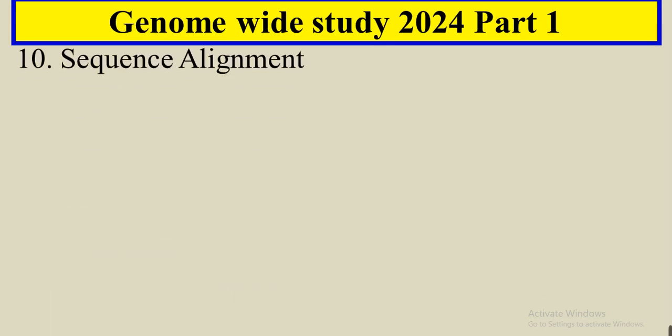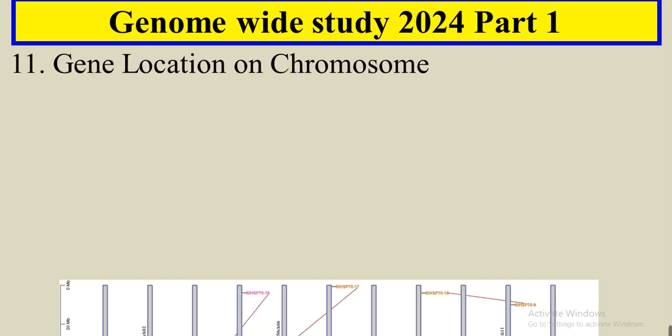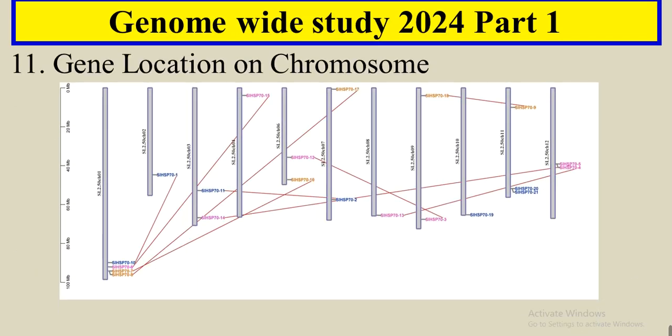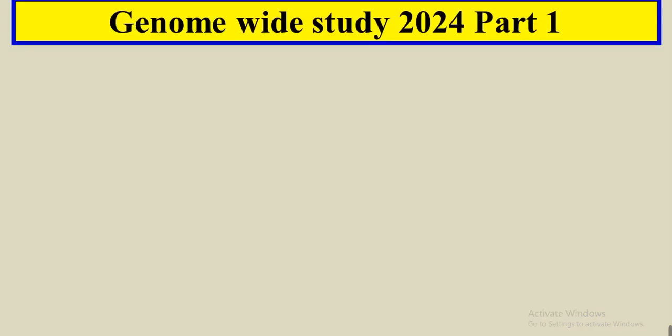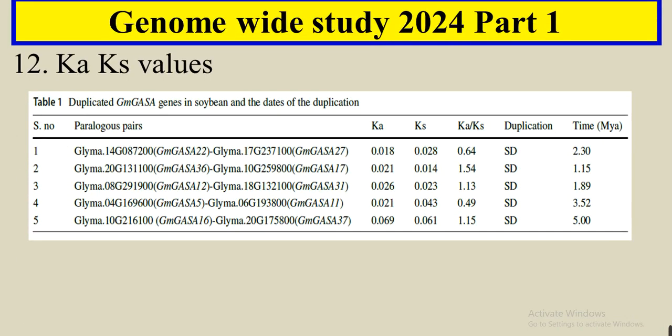And it also includes the sequence alignment and the gene location on the chromosome through TBtools or any other software in a very quick manner that doesn't give you any sort of error. And also we can find out Ka/Ks values.